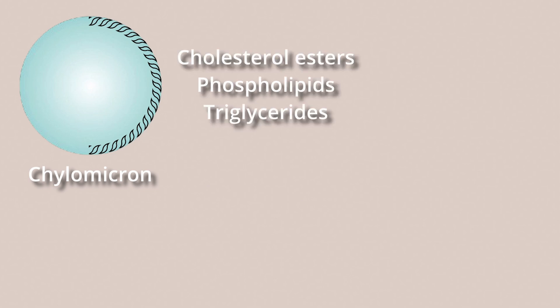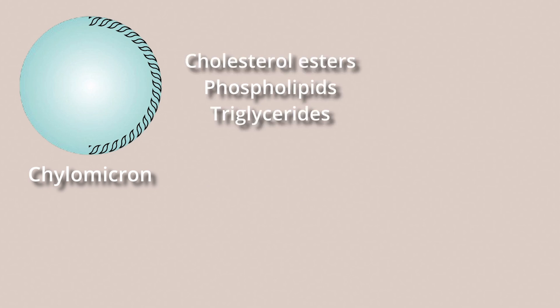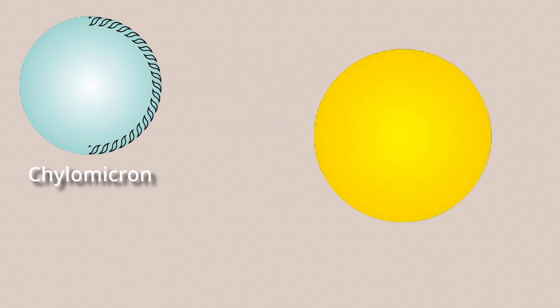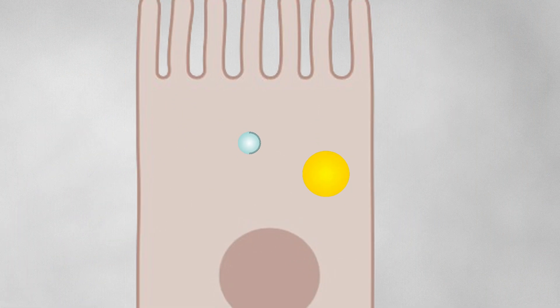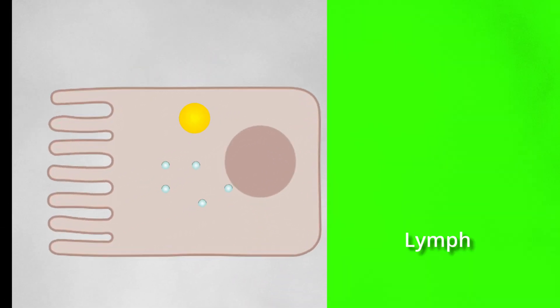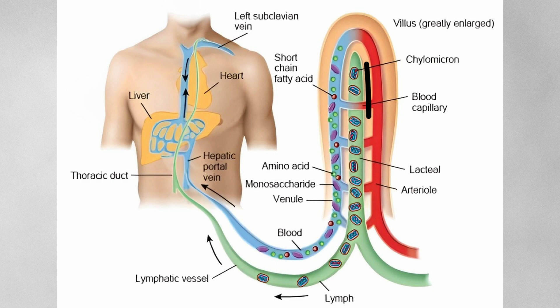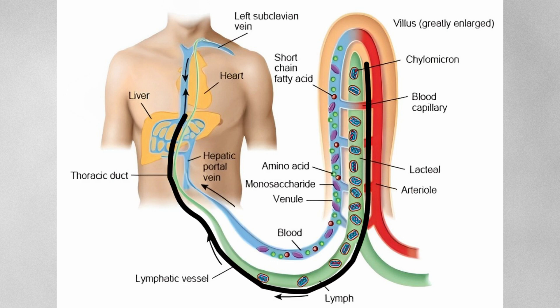A part of the resynthesized lipids are stored as cytosolic lipid droplets. Chylomicrons are then released from the vasolateral side and enter the general circulation through the thoracic duct.